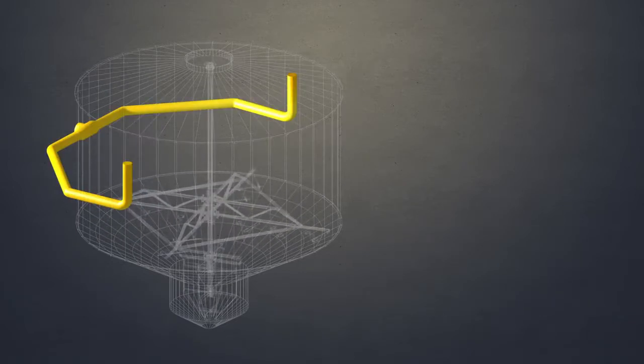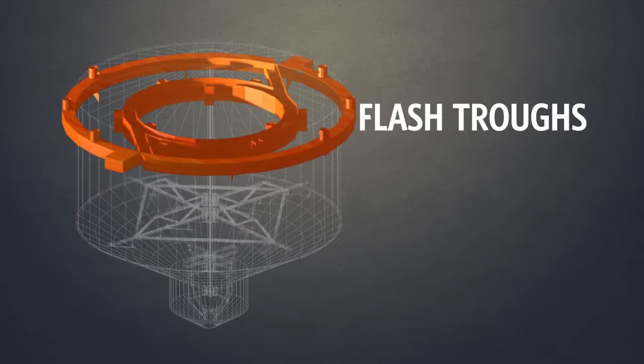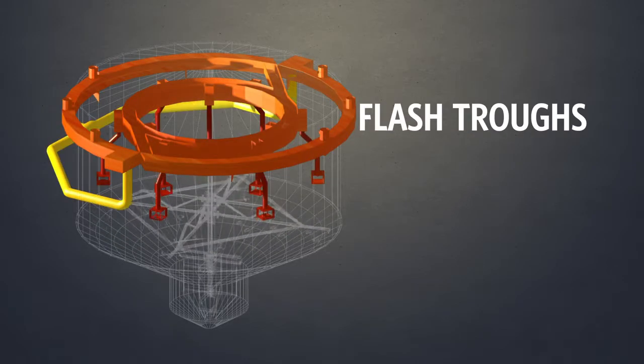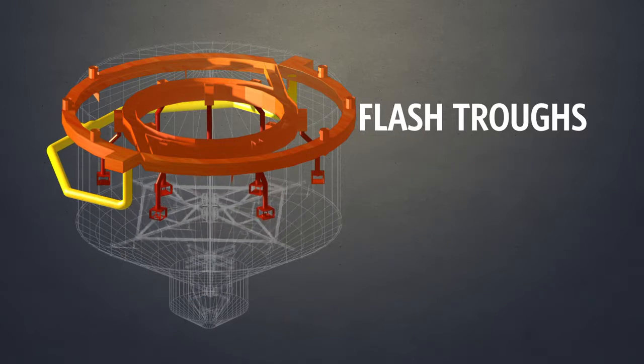Rather than use a typical flash tank, the Crompion LLT clarifier uses flash troughs, making it quicker and easier to distribute the juice from the heaters to the clarifier tanks, while significantly reducing the opportunity for air entrainment.